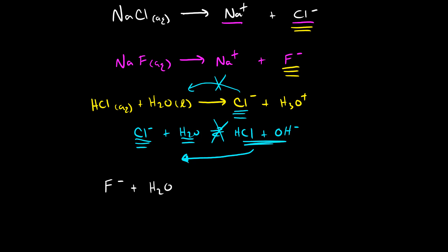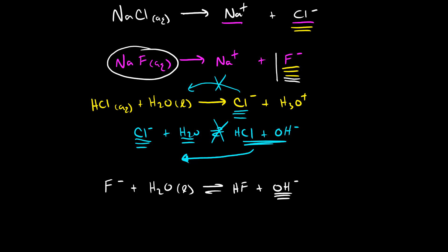Fluoride is a weak base, and when it reacts with water it undergoes a base dissociation reaction to produce HF, a weak acid, and hydroxide. Consequently, if we dissolve sodium fluoride in water, the fluoride produced will react with water and make hydroxide. So when sodium fluoride dissolves in water, we produce a weak base that makes some hydroxide, and a solution of sodium fluoride will have a basic pH.